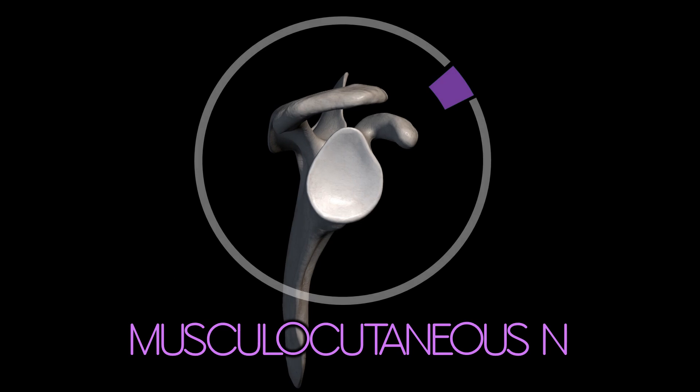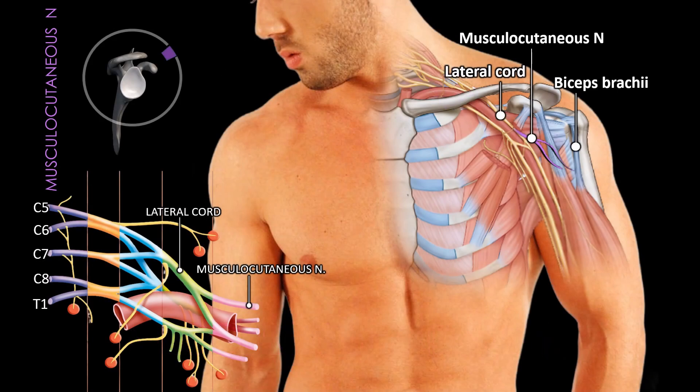The musculocutaneous nerve, a terminal branch of the lateral cord, provides innervation to the three muscles within the anterior compartment of the arm: the coracobrachialis, biceps brachii, and brachialis muscles. Although some authors argue against direct innervation of the shoulder joint by the musculocutaneous nerve, its significant contributions to the muscles of the arm play a crucial role in shoulder movement and overall function.